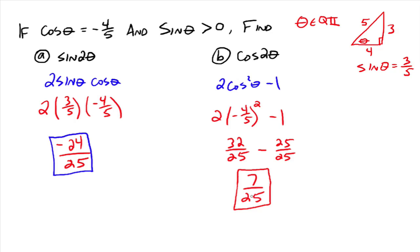That's the general idea — sometimes you need to draw a triangle or use an identity to find the sine or cosine of the angle, and then the rest is knowing the identities and plugging in the values. Study well, and please let me know if you have any questions.